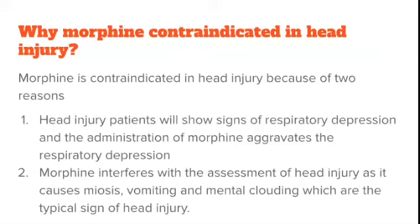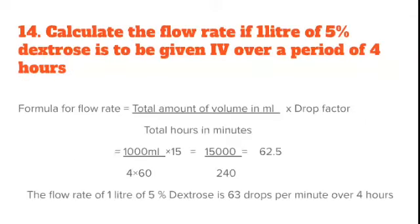Morphine is contraindicated in head injury for two reasons. First, head injury patients already show signs of respiratory depression, and administering morphine aggravates that respiratory depression, worsening the patient's condition — alternative drugs like fentanyl can be used instead. Second, morphine interferes with the assessment of head injury patients because it causes miosis (pupil constriction), vomiting, and mental clouding, which are also typical signs of head injury.